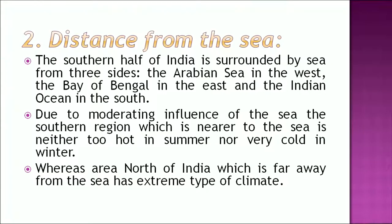Another factor is the distance from the sea. The southern half of India is surrounded by sea from three sides: the Arabian Sea in the west, the Bay of Bengal in the east, and the Indian Ocean in the south. Due to the moderating influence of the sea, the southern region is neither too hot in summer nor very cold in winter, whereas the area north of India, which is far away from the sea, has an extreme type of climate.